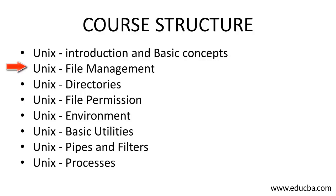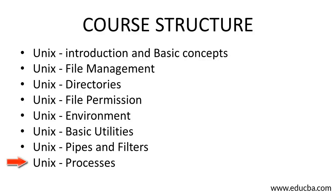Then comes Unix file management. Unix is an operating system in which everything is treated as a file, everything is in the form of a directory tree. So how these are managed in the system is what we will deal with in file management. Then we have Unix directories, where we will learn about different types of directories. Then we will be learning about file permissions — how a file will be given permission for read, write, and execute. Then we will learn about the Unix environment, how it is configured, how we can execute our different commands. Then we will have Unix basic utilities and different commands. Then we have pipes and filters in Unix — how different processes work.